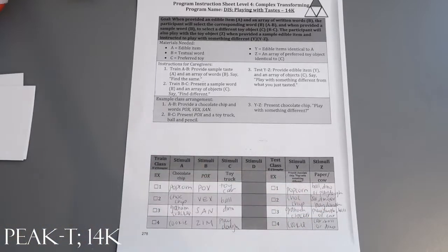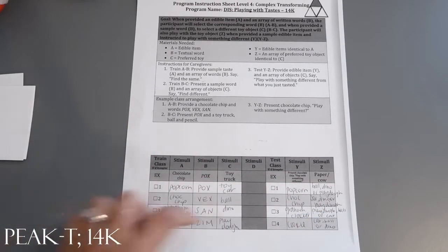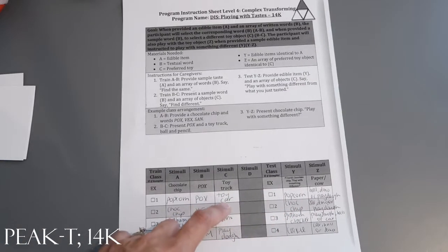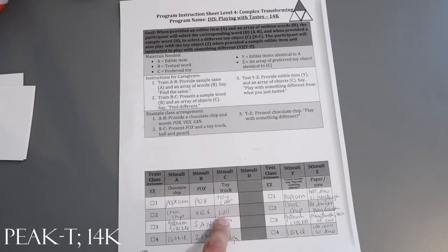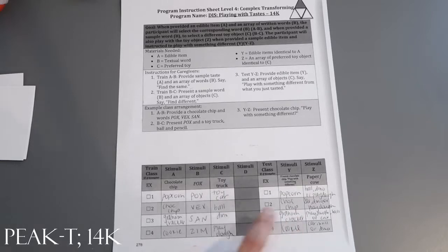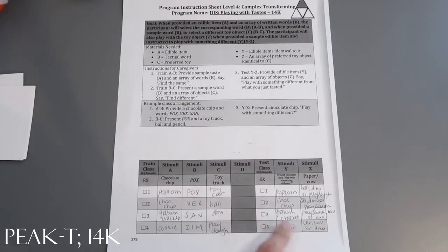So again, if you gave them popcorn they would pick anything but that toy car, chocolate chip - anything but the ball, graham cracker - anything but the dinosaur, and cookie - anything but the Play-Doh.